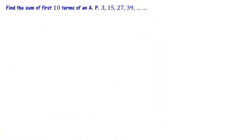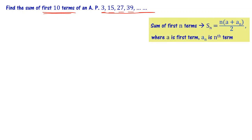Find the sum of first 10 terms of an arithmetic progression: 3, 15, 27, 39, and so on. We know that the sum of the first n terms of an arithmetic progression is defined as Sn equal to n into (a plus aₙ) divided by 2, where a is the first term and aₙ is the nth term.